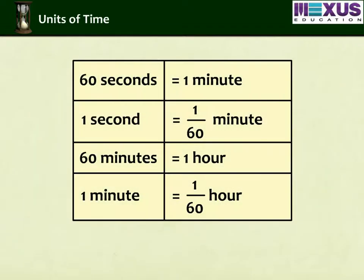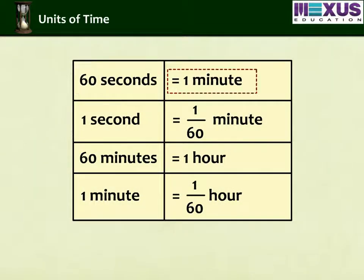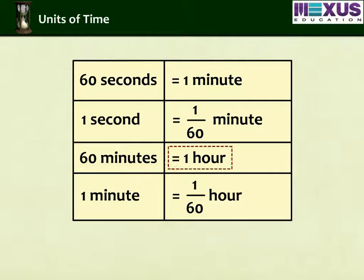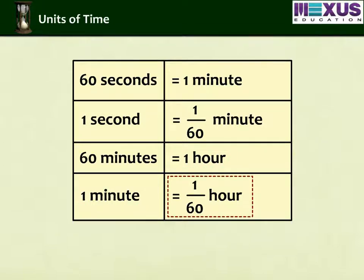Now, 60 seconds is equal to 1 minute. So, 1 second is equal to 1 upon 60 minutes. Also, 60 minutes is equal to 1 hour, so 1 minute is equal to 1 upon 60 hour.